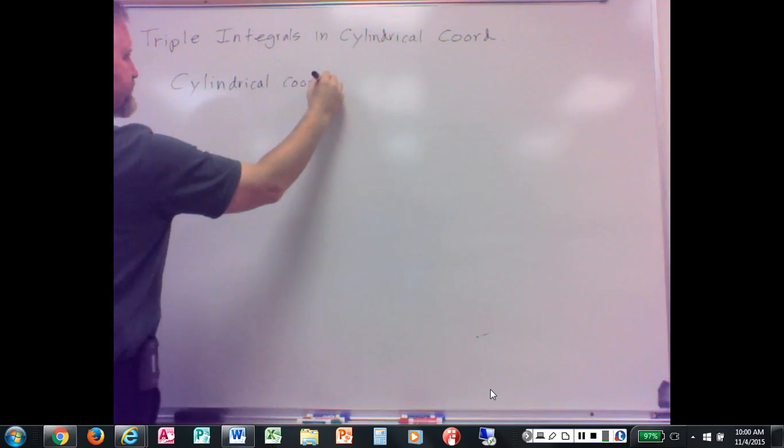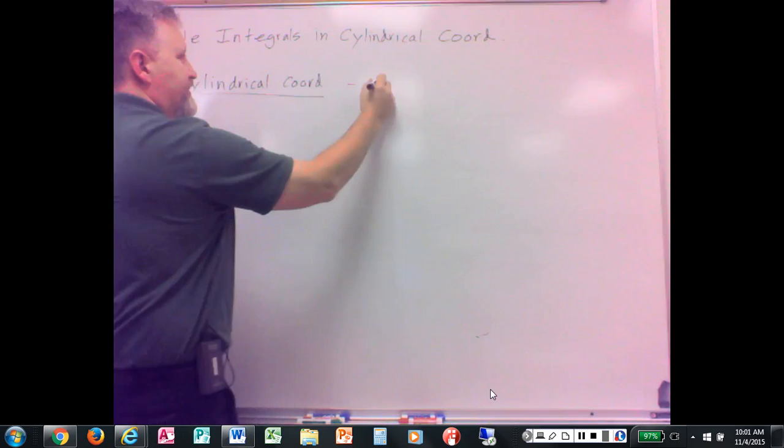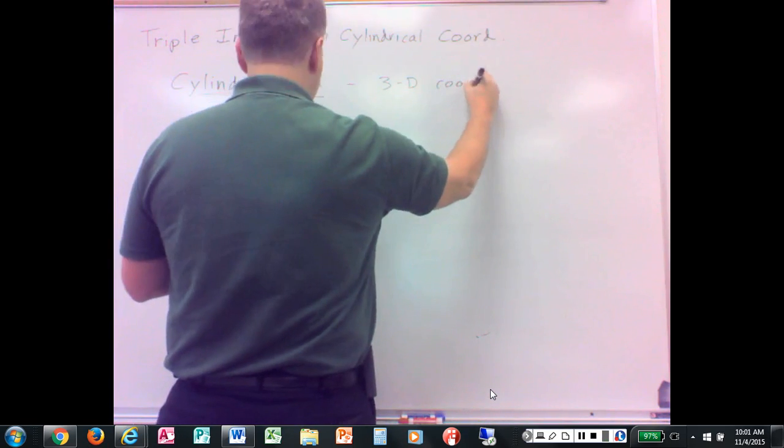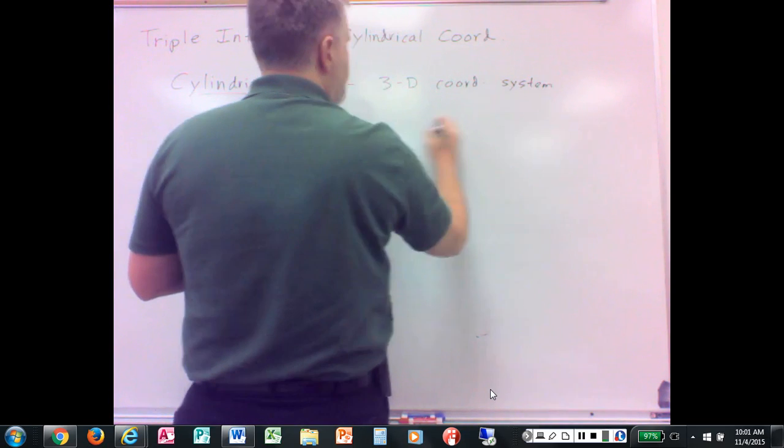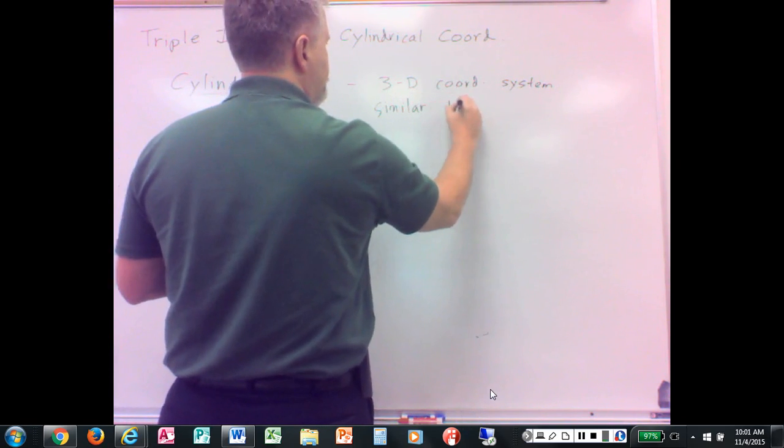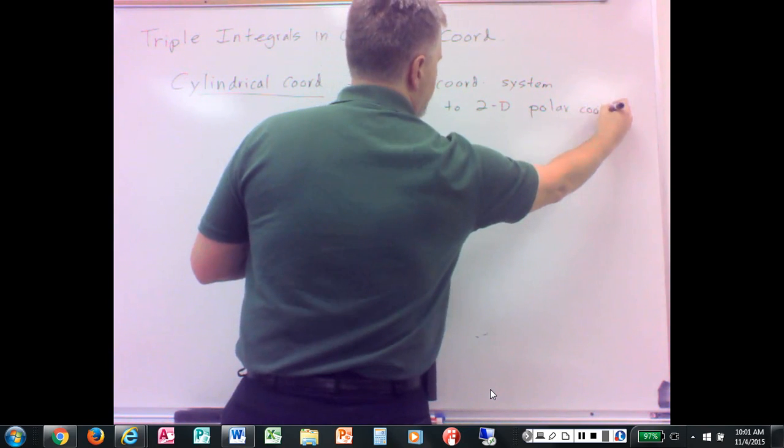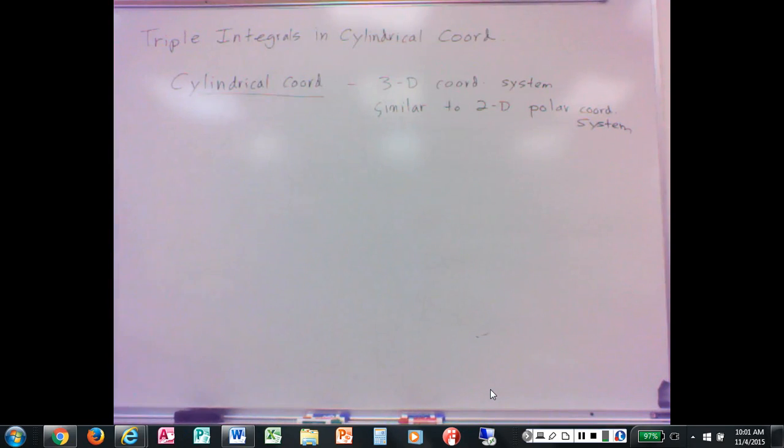All right, so three cylindrical coordinates, let's first talk about those since I don't believe we have quite yet. Cylindrical coordinates are the 3D coordinate system similar to the two-dimensional polar coordinate system, and the reason we mention it here is because sometimes cylindrical coordinates make it easier to do triple integrals, some triple integrals.